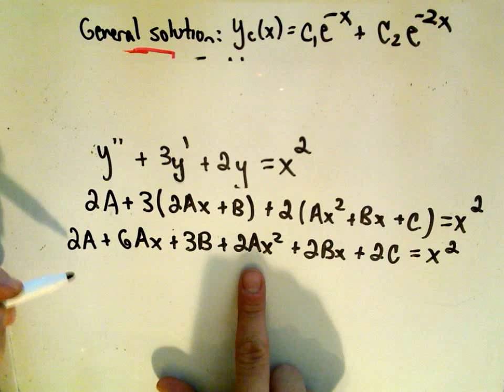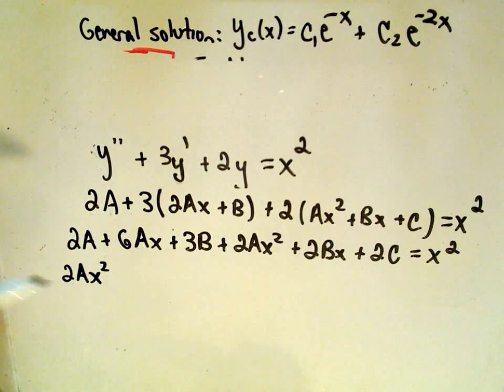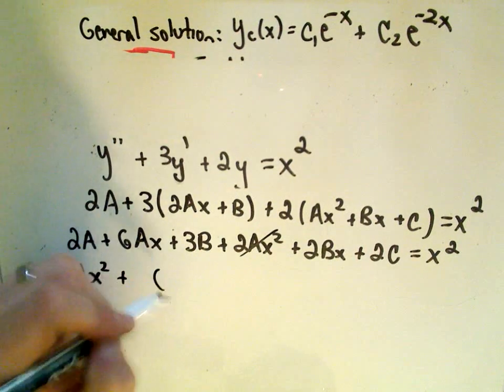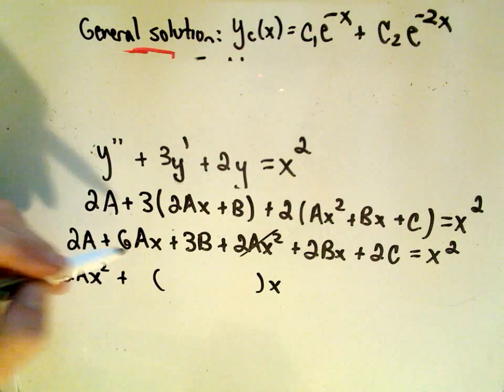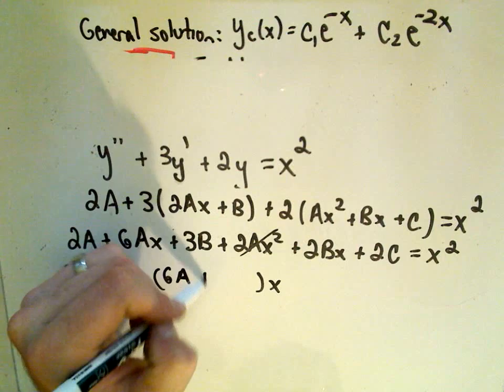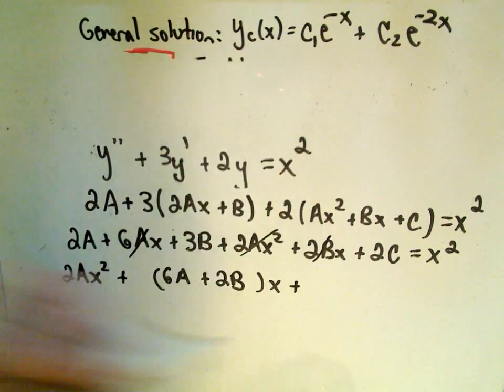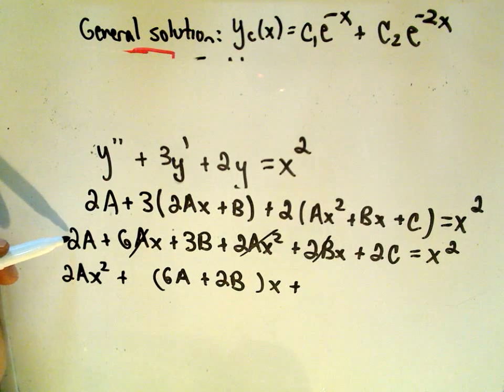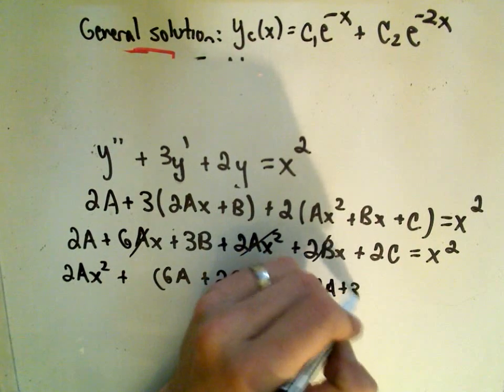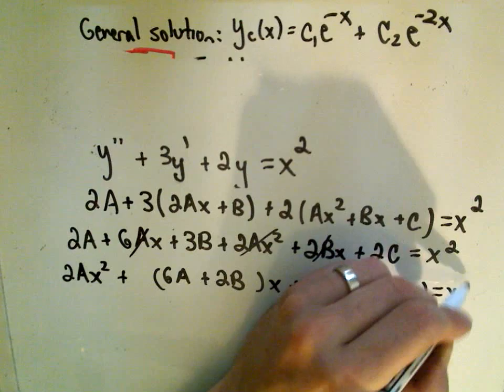Now I basically am just going to have to figure out a, b, and c in this problem, and use that to come up with my particular solution. So I'm just going to multiply this all out, we'll get 2a, when I distribute it looks to me like I'll get 6ax plus 3b plus 2ax squared plus 2bx plus 2c equals x squared. And now I'm just going to group all of my like terms together. I see a 2ax squared, that's the only x squared I see floating around in my problem, so that'll take care of that part.